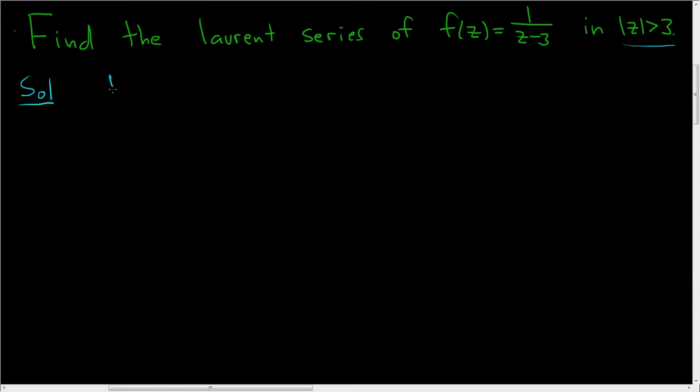So there's a formula that we want to use in this problem. 1 over 1 minus z is equal to the sum as n runs from 0 to infinity of z to the n. And this is true if the modulus of z is smaller than 1.